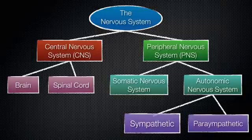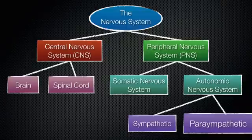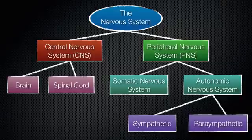And then we have the parasympathetic, which is opposite to the sympathetic. This is involved during rest and digest activities — it's the opposite of being under stress. It's when there's rest, you're slowing things down, you're relaxing. That is more parasympathetic, and both of these are under the autonomic nervous system.